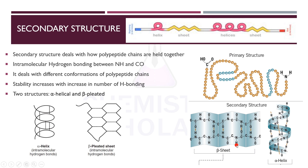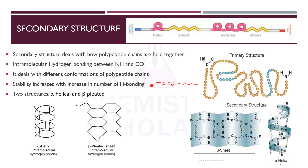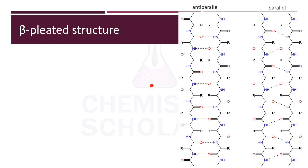When you fold the primary structure or attach two primary structures together, you get the secondary structure. The secondary structure is of two types: alpha helical and beta-pleated. It deals with different conformations of polypeptide chains — the chains can be coiled, giving alpha helical structure, or arranged in a pleated form, giving beta-pleated structure. There is hydrogen bonding between NH and CO groups of the polypeptide chains, which increases stability.